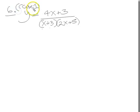So we're applying that rule. That'll be A over the first linear factor, which is x plus 3, plus B over the second linear factor, 2x plus 5. Great.